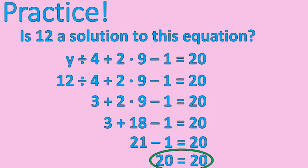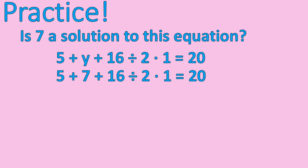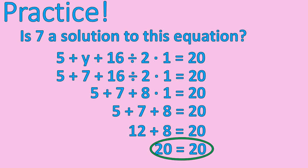Now we'll practice with one more so you can see what one looks like when it doesn't work out. Is 7 a solution to this equation? Pause the recording. We substitute the value of 7 in for y, then start with division and multiplication per our order of operations. 16 divided by 2 is 8, and 8 times 1 is 8. Now we do the addition: 5 plus 7 is 12, and 12 plus 8 is 20. Ha — did I fool you? I told you it wasn't going to work out, but it actually did! Hopefully you were confident. Comment below if I got you on that one, or if I didn't and you're mad at me.